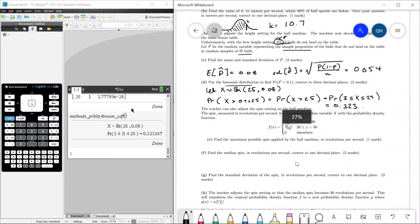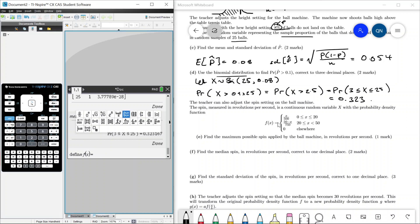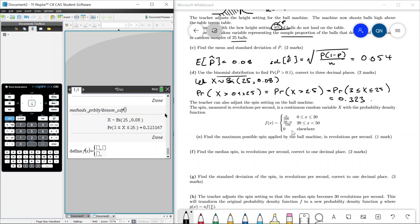Teacher can also adjust the spin setting on the ball machine. The spin measured in revolutions per second is a continuous random variable. Here's the probability density function. Let's go ahead and define that. We're going to define our f of x to be a piecewise function. Even though there's three pieces to this function, we're actually going to go for two because the 0 is kind of like outside of the main domain which is from 0 to 50. We can just assume 0 is everywhere else. So we're going to have x over 500 and 50 minus x over 750. This is 20 less than or equal to x less than 50 and above it's 0 less than or equal to x equal to 20.